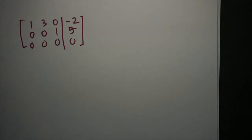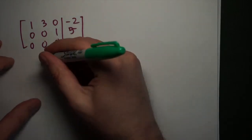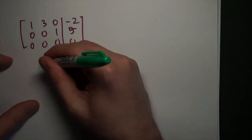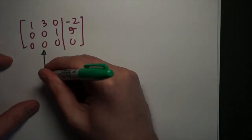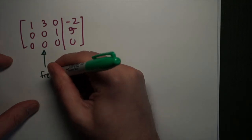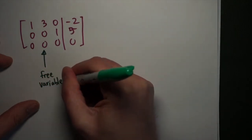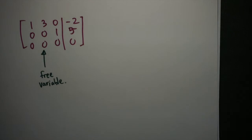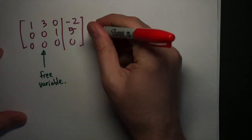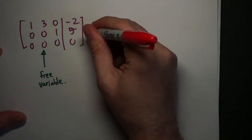So here's the last example: the matrix has entries 1, 3, 0, negative 2 in the first row, 0, 0, 1, 5 in the second row, and then a row of zeros. When this happens, we have no way of getting rid of this 3. So we call this type of column a free variable. This corresponds to the y in our particular example, so we're going to let y be a free variable.